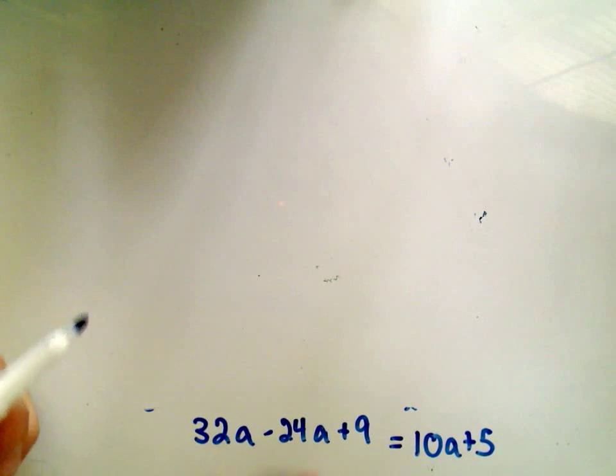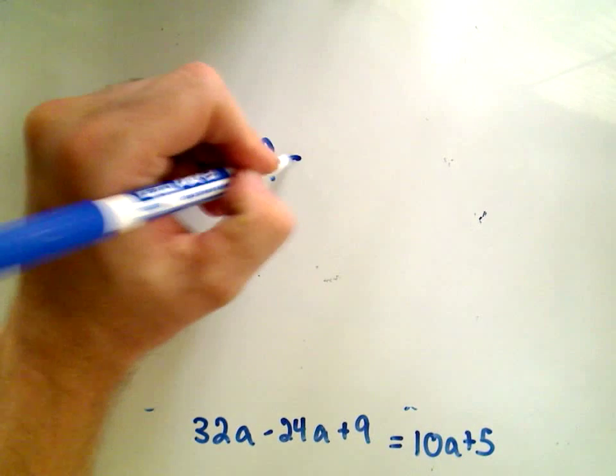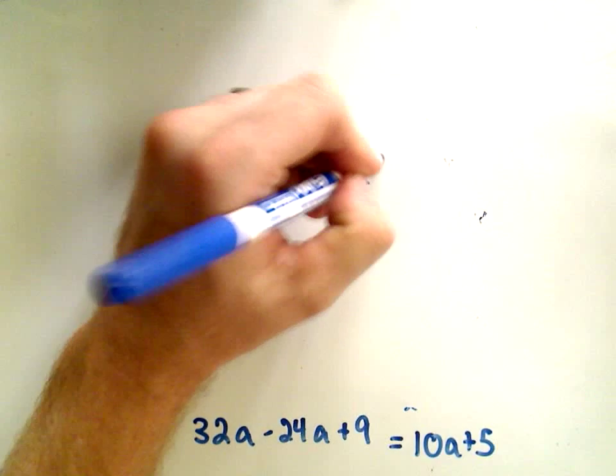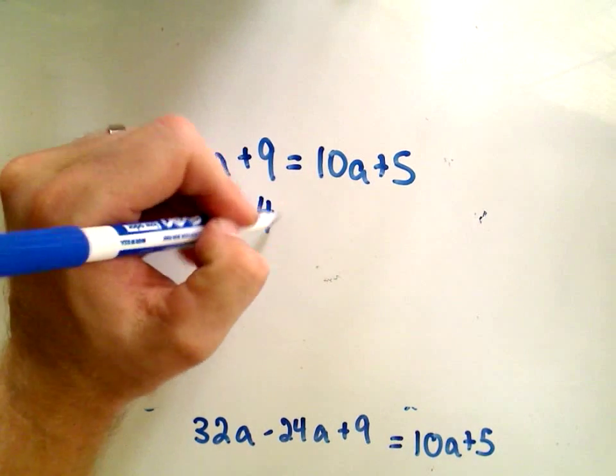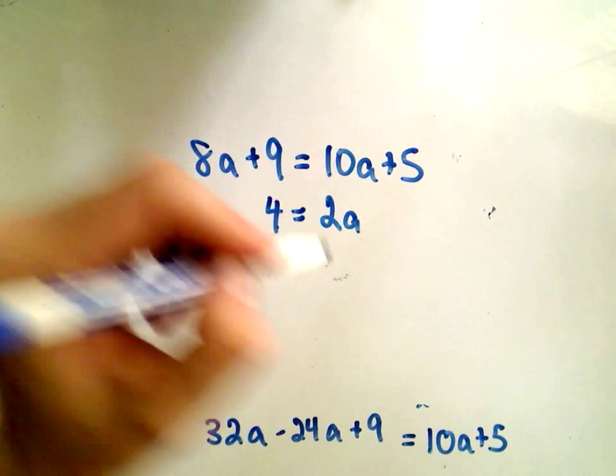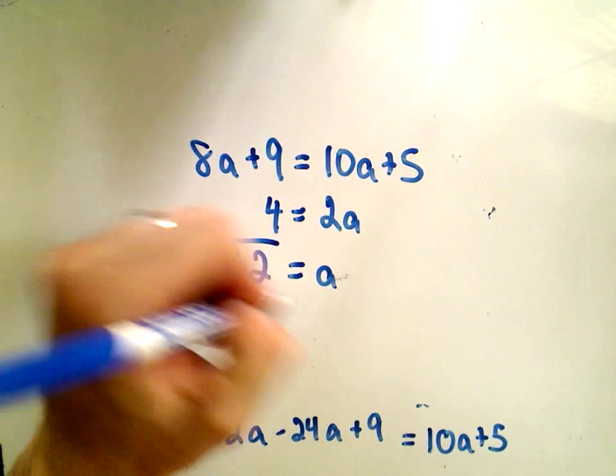32 minus 24, that's just going to give us 8a plus 9. That equals 10a plus 5. We can subtract 5 from both sides, subtract 8a from both sides, divide by 2. It looks like we're going to get the value a equals 2.